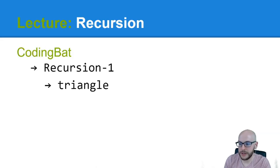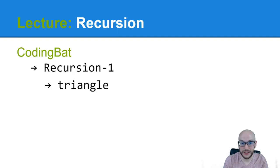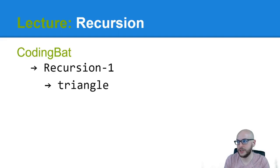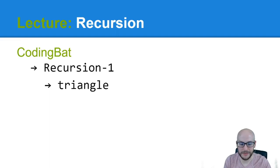For homework, I want you to do CodingBat Recursion 1 — Triangle. Starting tomorrow we'll take a look at solutions. If you've got a solution you're proud of, hit me up on Discord and I'll take a look — you can paste it there or I can dig into CodingBat. That's going to wrap up our discussion for today. Class dismissed.